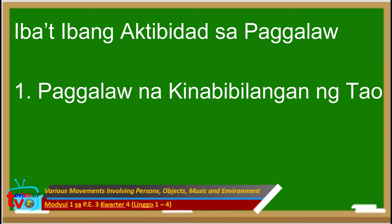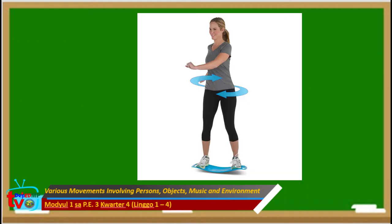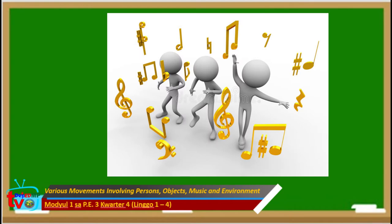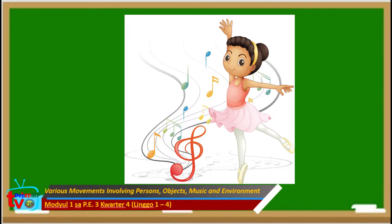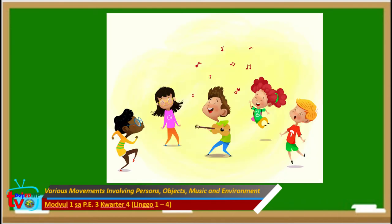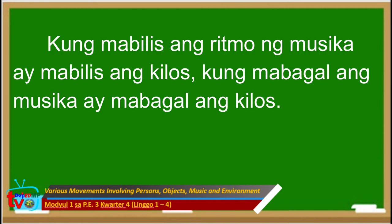Sa suriin, ano-ano ang mga iba't ibang aktibidad sa paggalaw? Ang una ay paggalaw na kinabibilangan ng tao na maaaring individual, pair o group, at musika — kahit anong uri at tempo ng musika na pwedeng salihan ng isa, dalawa, o grupo ng tao. Kung mabilis ang ritmo ng musika, ay mabilis ang kilos. Kung mabagal ang musika, ay mabagal ang kilos.